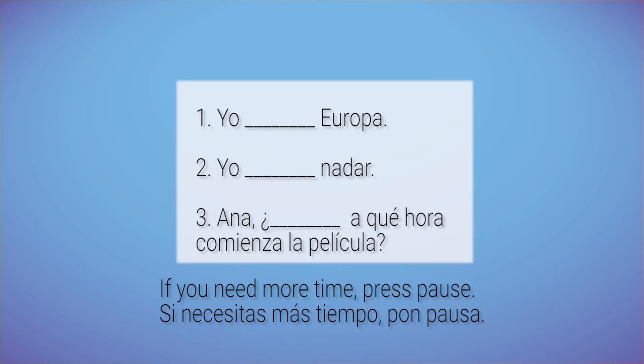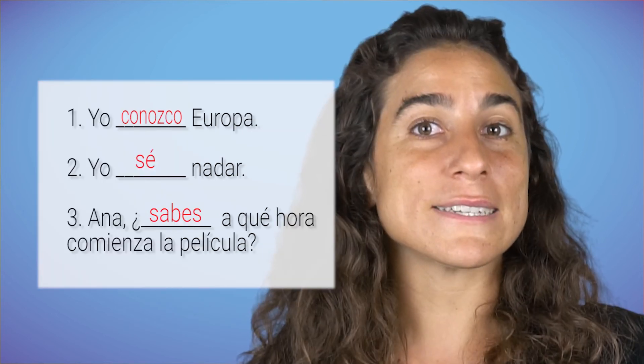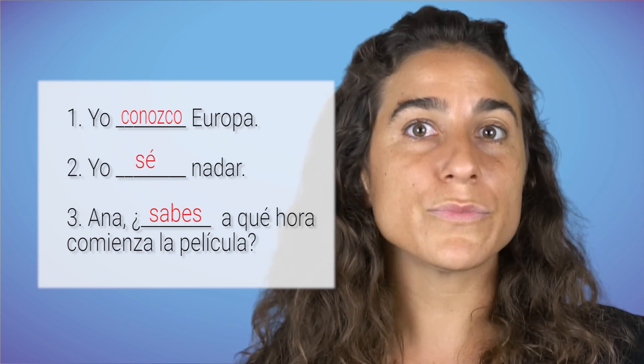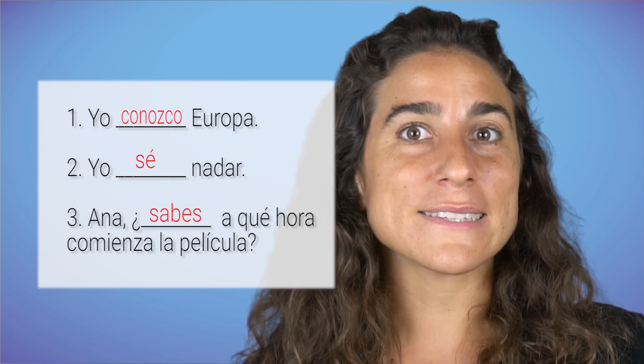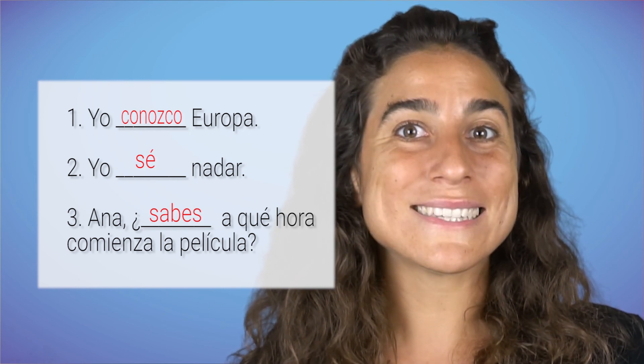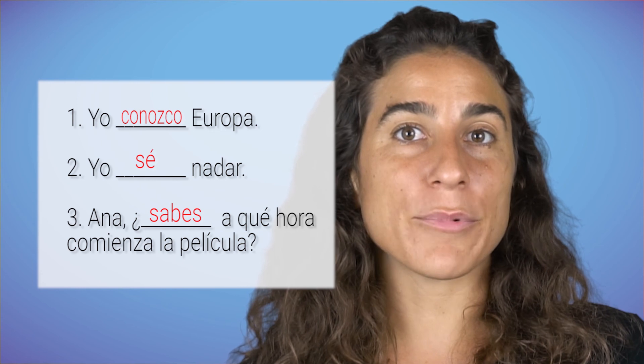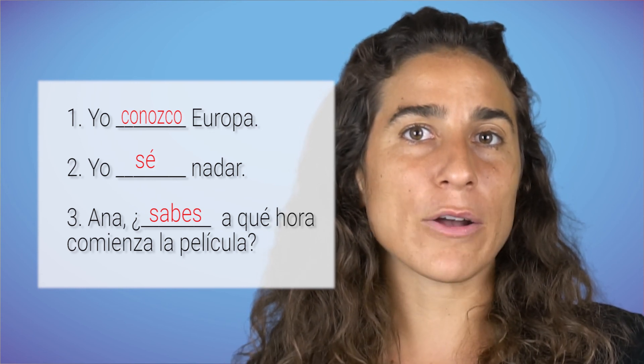Look at these examples. Which verb would you put in the blank space — saber or conocer? Remember to conjugate it with the appropriate person. Sentence number one is: Yo conozco Europa. Sentence number two: Yo sé nadar. And sentence number three: Ana, ¿sabes a qué hora comienza la película? Leave in the comments your score and if you have any doubts about this exercise.